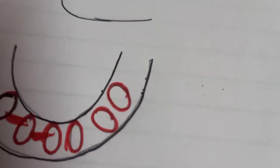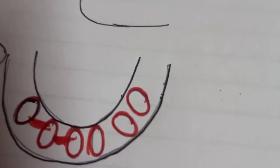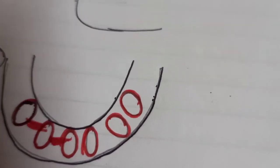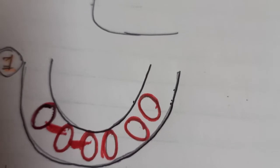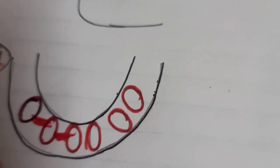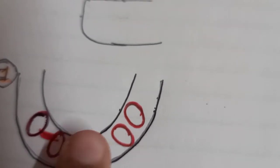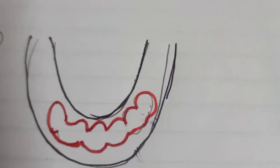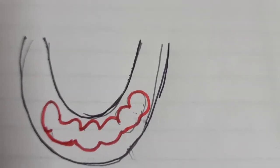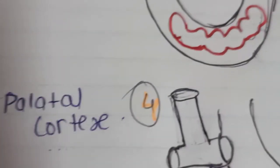After extraction, the socket looks like this. We have to connect — that means we have to remove the interdental bone. We remove the interdental bone, and after removing it, the picture looks like this.